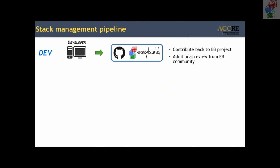Our stack management pipeline uses a classical three-stage development model with dev, QA, and prod. The dev stage is our contribution to the EasyBuild community — developers write EasyConfig files on their local machines and contribute them back to the EasyConfig repositories. The advantage is both contributing back and getting feedback from the EasyBuild community, since sometimes you're building software you've never seen and you don't want to reinvent the wheel.